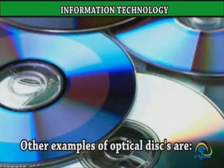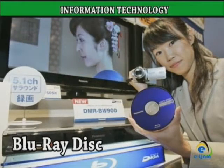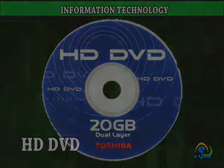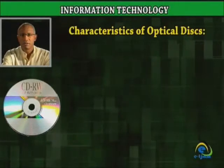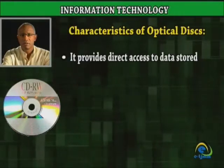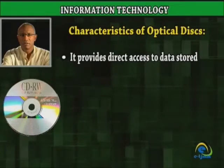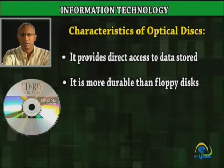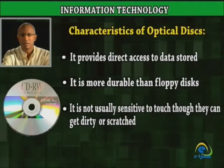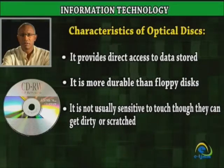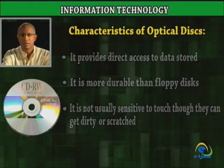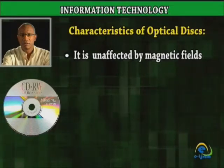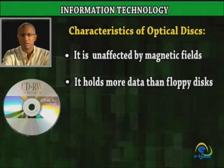Other examples of optical disks are Blu-ray disk and HD DVD. Characteristics of optical disk: It provides direct access to data stored. It is more durable than floppy disks. It is not usually sensitive to touch, though they can get dirty or scratched. It is unaffected by magnetic fields. It holds more data than floppy disks.